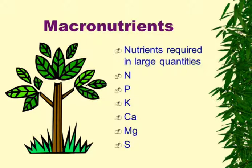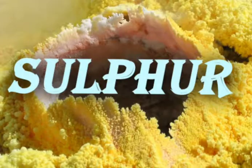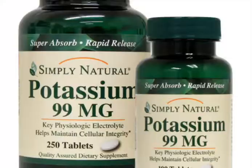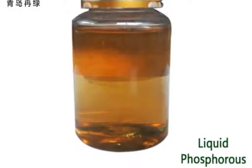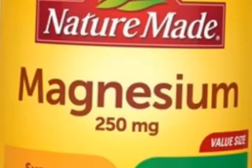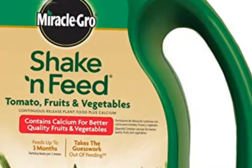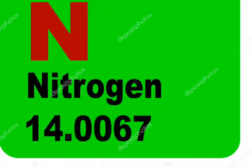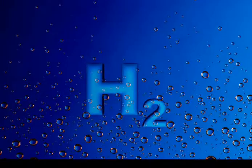Macronutrients are required by plants in large quantities. Examples include sulfur, potassium, phosphorus, magnesium, calcium, and others like nitrogen, carbon, hydrogen, and oxygen.